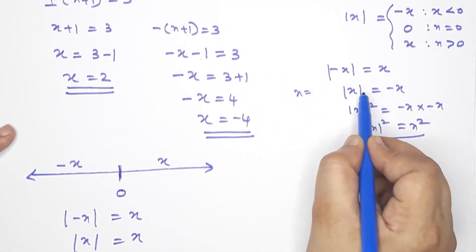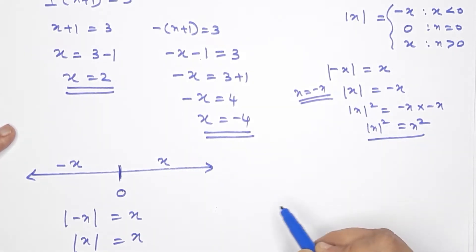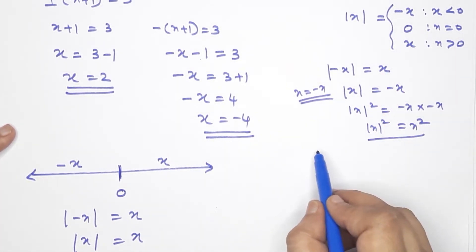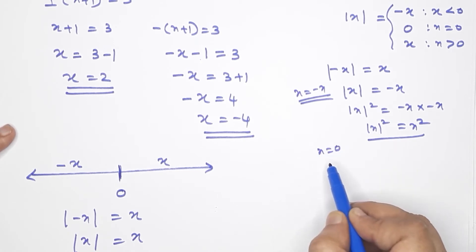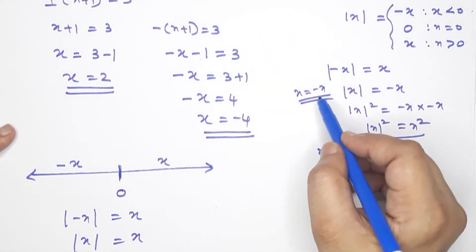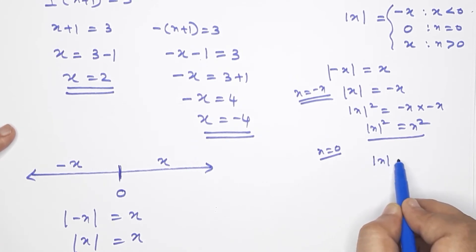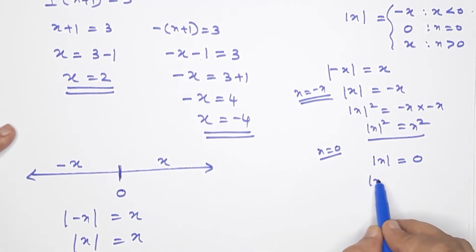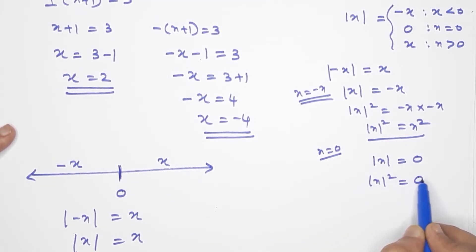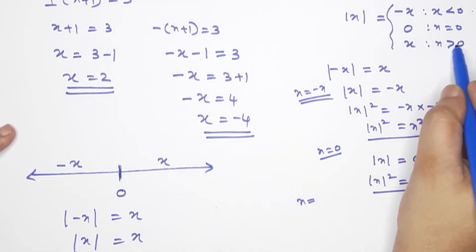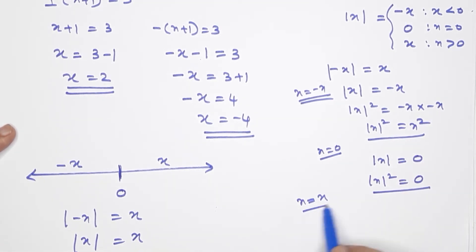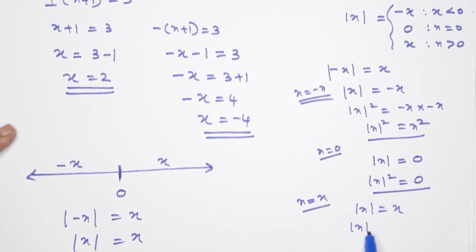This is minus x into minus x, meaning x squared. So modulus x equals square root of x squared for the negative case. For x equals 0: modulus of x equals 0, and x equals 0. If you draw positive x, and the modulus gives it x.